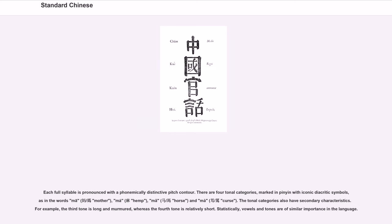Each full syllable is pronounced with a phonemically distinctive pitch contour. There are four tonal categories, marked in Pinyin with iconic diacritic symbols, as in the words mā (mother), má (hemp), mǎ (horse), and mà (curse). The tonal categories also have secondary characteristics — for example, the third tone is long and murmured, whereas the fourth tone is relatively short. Statistically, vowels and tones are of similar importance in the language.